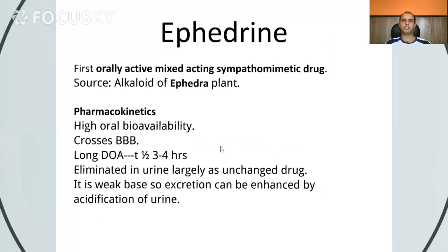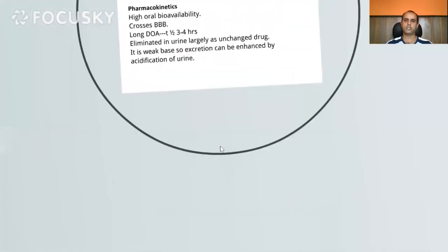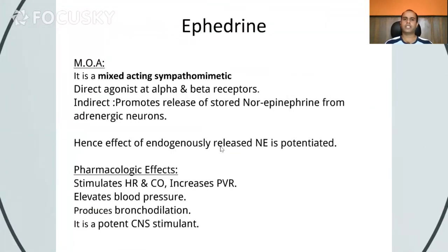Moving on to Ephedrine. Ephedrine is the first orally active mixed acting sympathomimetic drug. Its source is the Ephedra plant. It has high oral bioavailability, is known to cross the blood-brain barrier, and has a long duration of action of 3 to 4 hours. Its excretion can be enhanced by acidification of the urine. Regarding its mechanism of action, being a mixed acting sympathomimetic drug, it has direct agonist action on both alpha and beta receptors, and also acts indirectly by promoting the release of norepinephrine from adrenergic neurons.